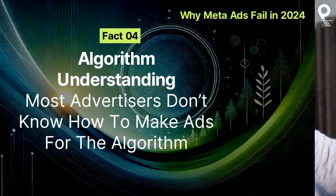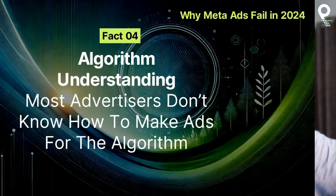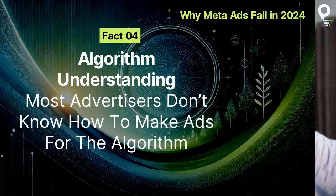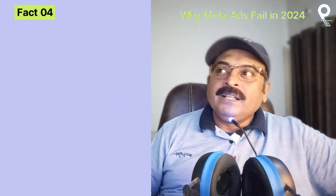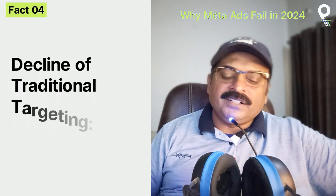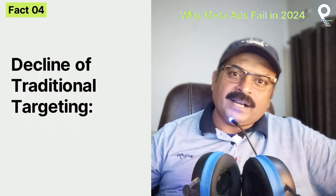Most advertisers don't know how to make ads for the algorithm. This leads to the decline of traditional targeting. Traditionally, we have had to target specific audiences one by one.